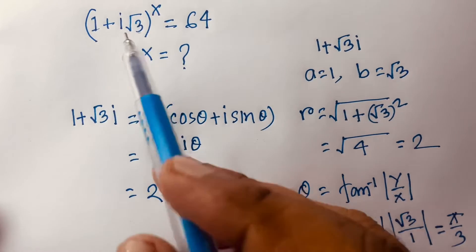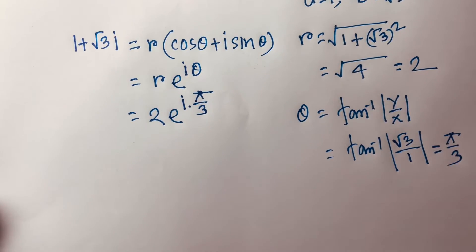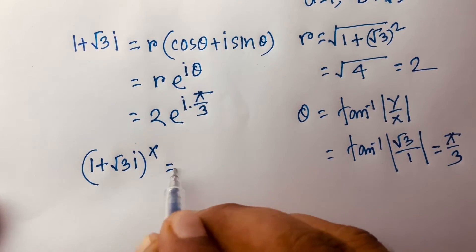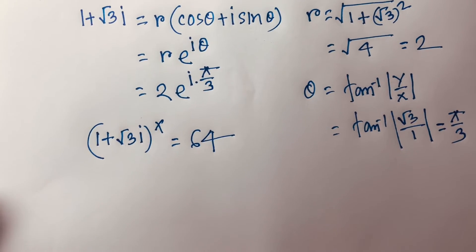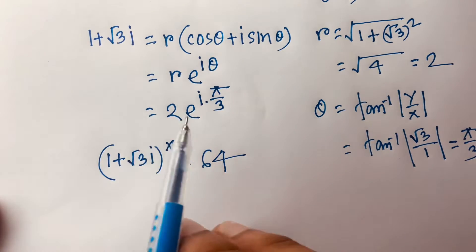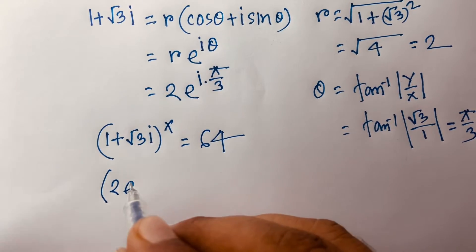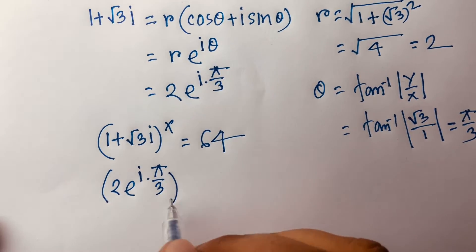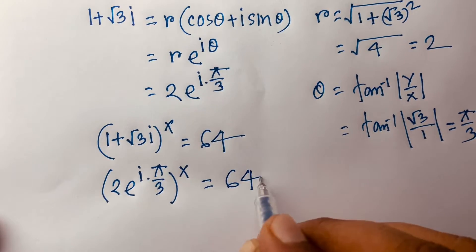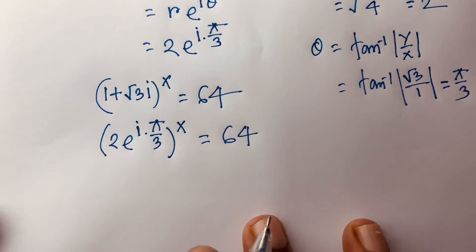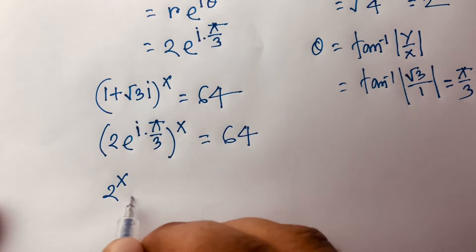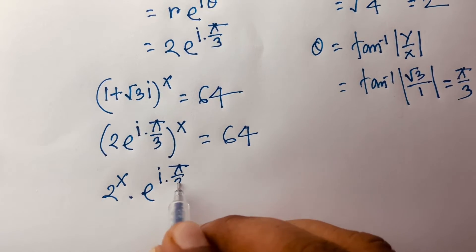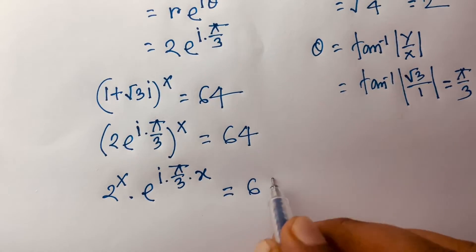Our equation is (1 + i√3)^x = 64. Substituting, we have (1 + √3·i)^x = 64, and since 1 + √3·i = 2e^(iπ/3), this becomes (2e^(iπ/3))^x = 64. So 2^x · e^(iπx/3) = 64.